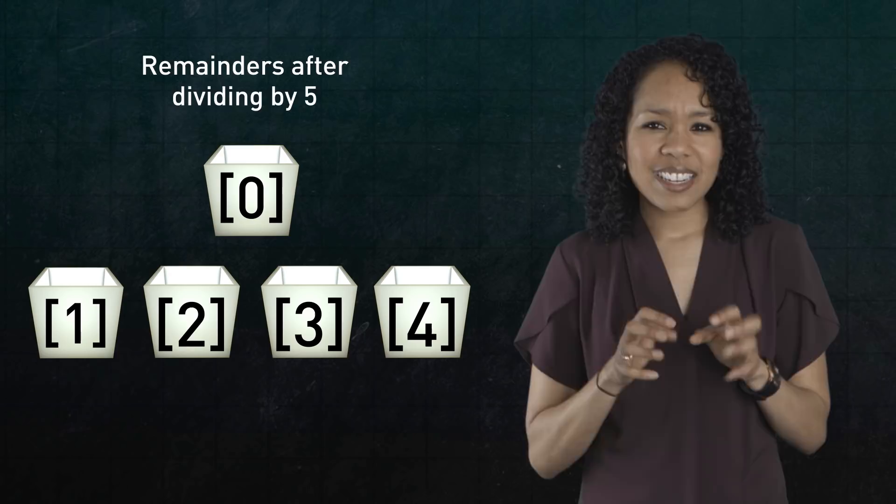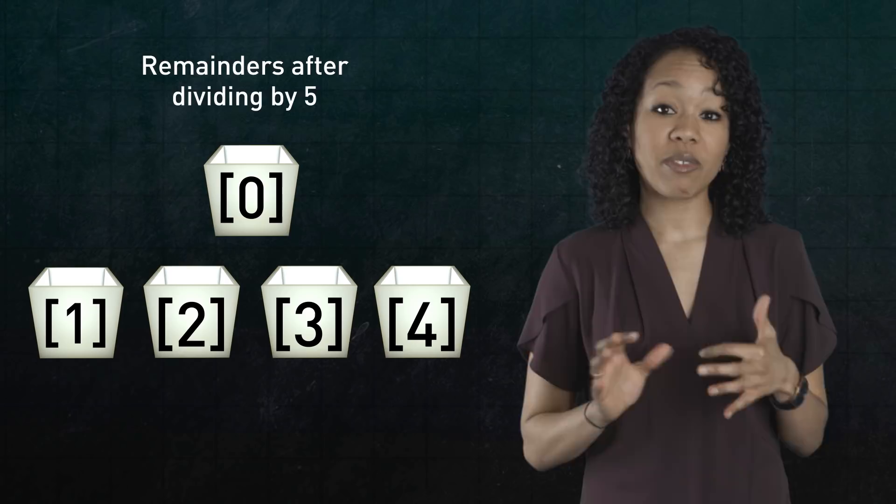What's more important is how they relate to the number 5 and its multiples. Really, we're identifying or packaging together the integers that share a common relationship, namely, the remainder you get after dividing by 5. In this sense, integers lying in the same box are equivalent.